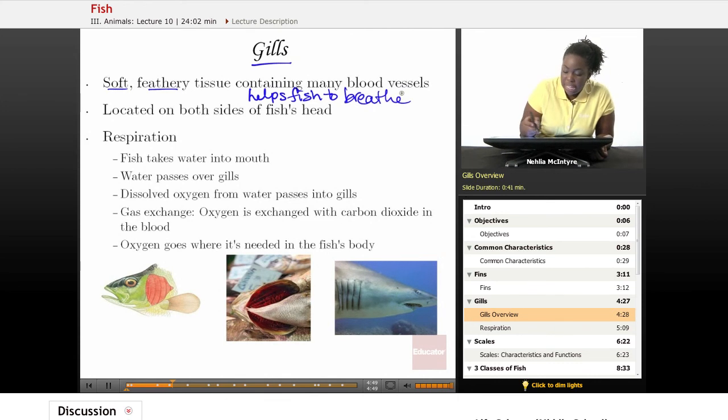The fish contains several blood vessels, and that's because the oxygen from the water is collected into those blood vessels, and those blood vessels go throughout the body of the fish.